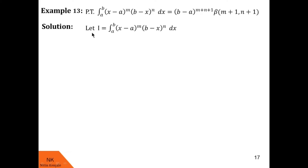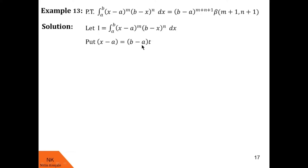We consider this LHS integral as I. To solve this, we substitute x minus a equal to b minus a into t. Differentiating both sides: the derivative of x is dx and the derivative of a is 0, so on the LHS we have only dx. On the RHS, the derivative of b minus a into t is b minus a dt. So dx equals b minus a into dt.